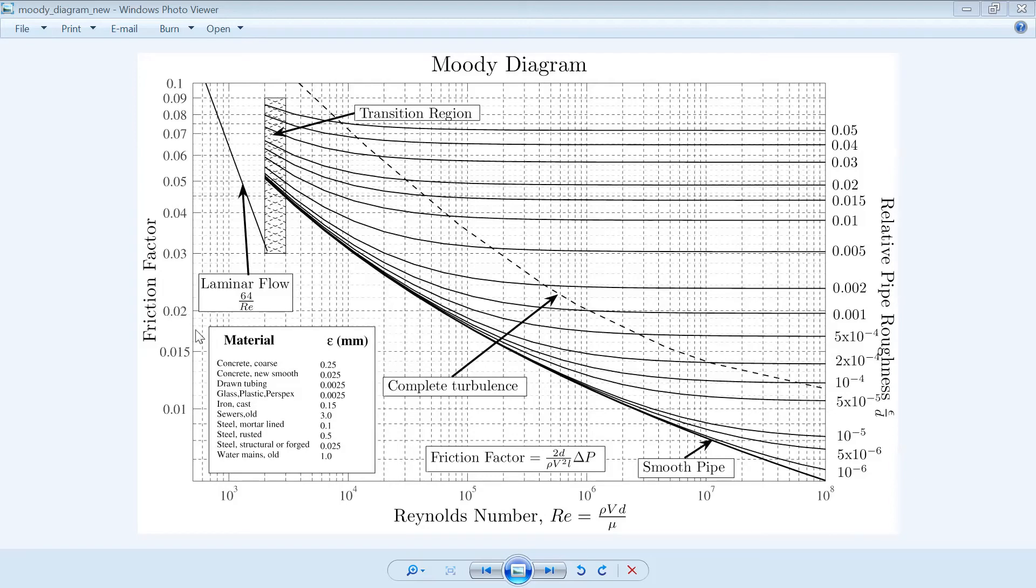As long as it's under 0.02 and over 0.015, you're good. That's how you read the Moody diagram. Use this diagram when the Reynolds number is more than four thousand, which is turbulent flow.